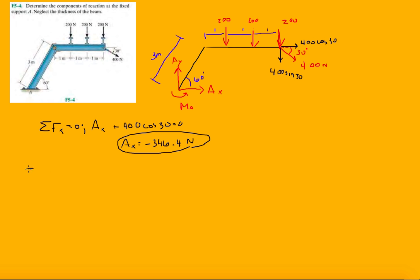Which is minus 346.4 newtons. That's one reaction. Now let's do ΣFy = 0. We're gonna have Ay minus 400 sine 30, which is minus 200, and then minus 200 the top three.